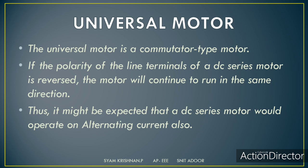Universal motor is actually a commutator type motor. When we apply AC to a DC series motor, what happens is: AC is an alternating varying quantity, so polarity reversal occurs. When the polarity of DC supply reverses, the motor runs in the same direction. So we apply AC — which acts like a continuously reversing DC supply — to the DC series motor, and it works. One example is a drilling machine, which uses a universal motor.